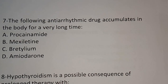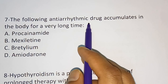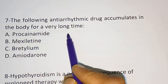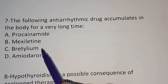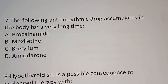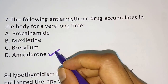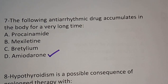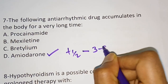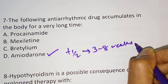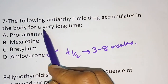Question 7: Which of the following anti-arrhythmic drugs accumulates in the body for a very long time? Options are procainamide, mexiletine, bretylium, and amiodarone. The correct answer is amiodarone. Amiodarone has a half-life of almost 3 to 8 weeks, making it the anti-arrhythmic drug that accumulates in the body for the longest time.